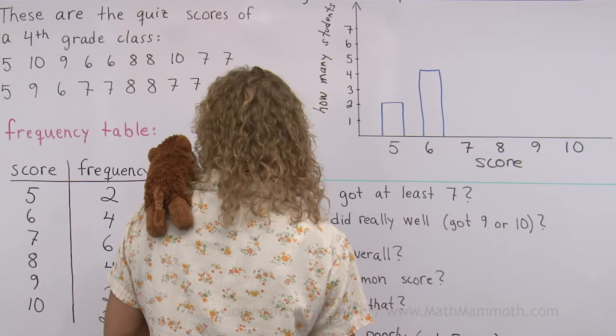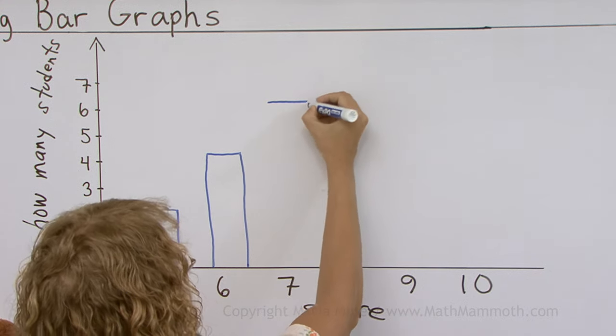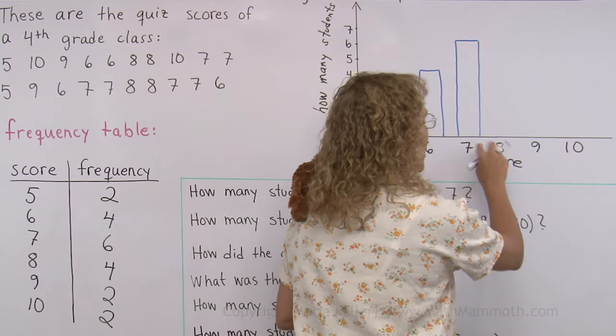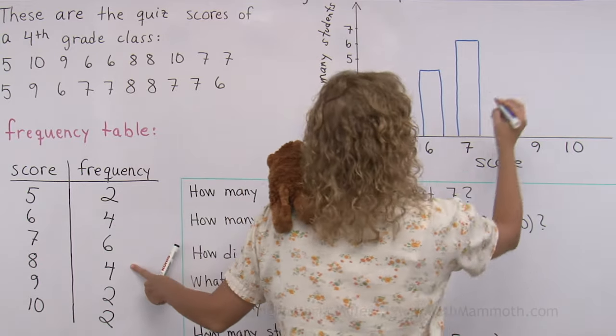And then seven. Six students. Okay, that's quite many. And then eight points. How many students got that? We're here at four again.